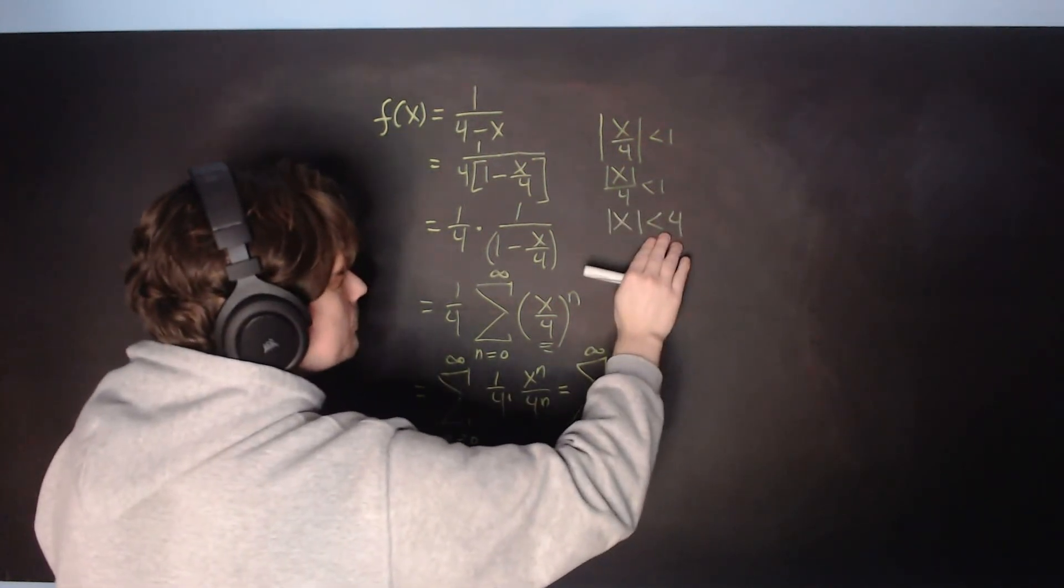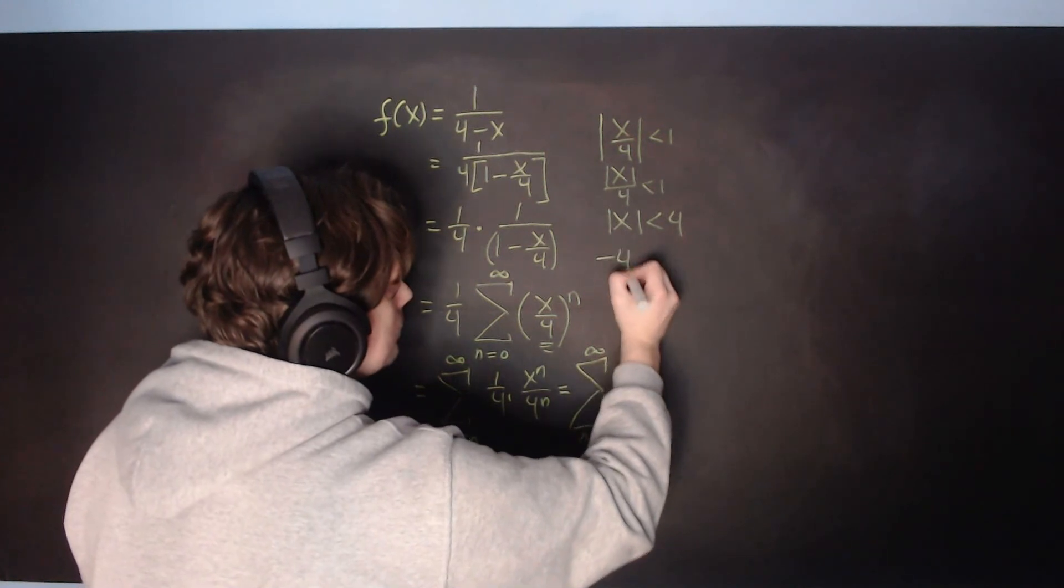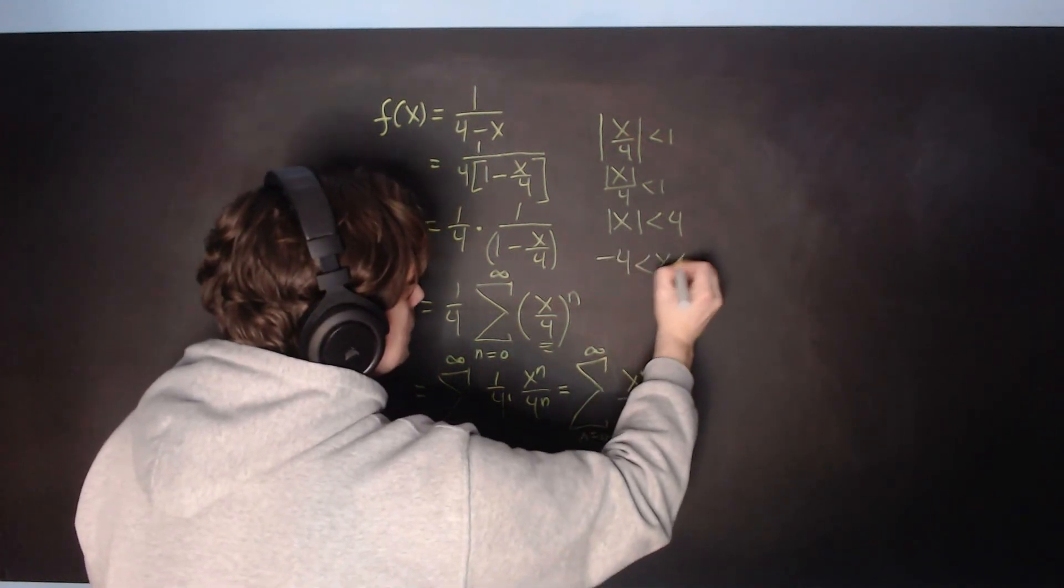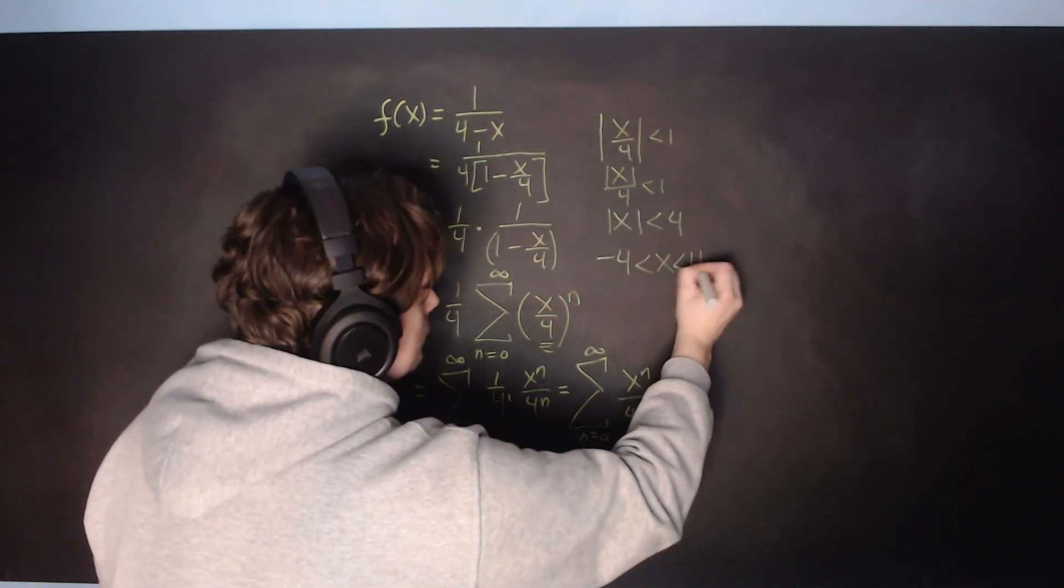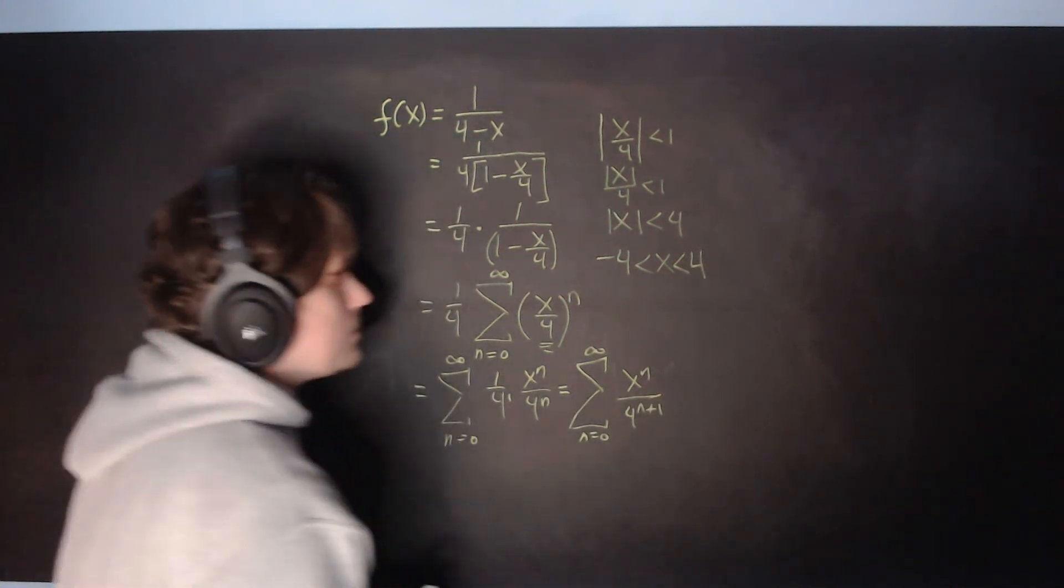And lastly, we write this as negative 4 is less than x, which is less than 4 rather. And that then becomes the interval of convergence.